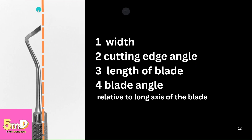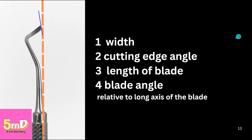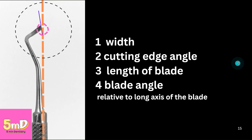What is this cutting edge angle? It is again measured from the long axis of the instrument. The angle formed between the long axis of the instrument and the long axis of the cutting blade is known as the cutting edge angle. In G.V. Black's formula, they do not use a standard 360-degree circle — they use a 100-degree circle, known as the centigrade circle.